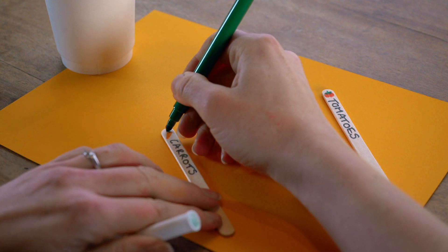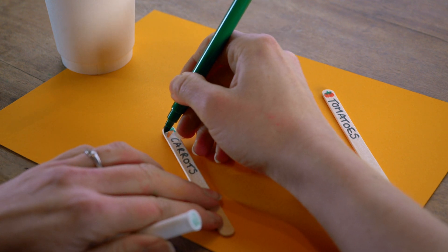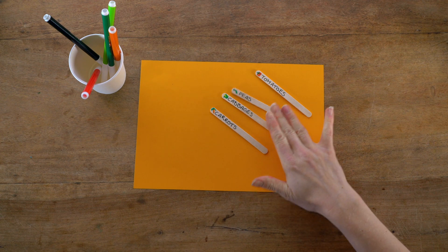Simply write the names of your vegetables onto the sticks and draw a picture. You can decorate your sticks any way you want.